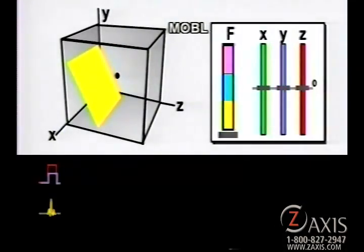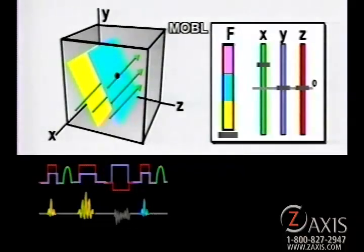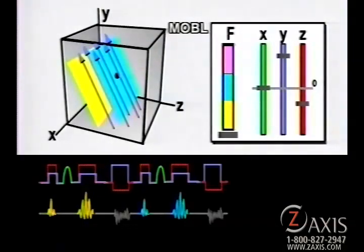In the multiple image oblique mode, the gradient coils are fired in pairs to rotate the gradient fields. As different frequencies of RF are applied, the image plane moves at an angle through the scanning volume.